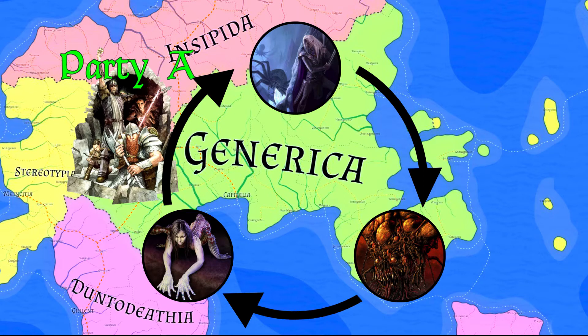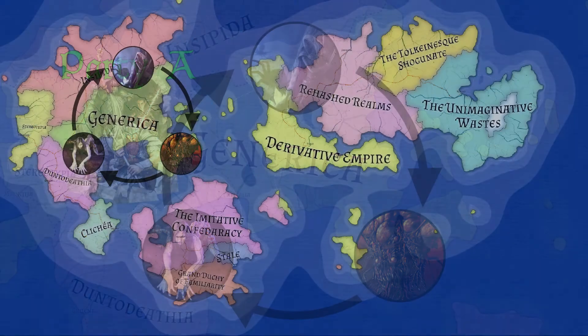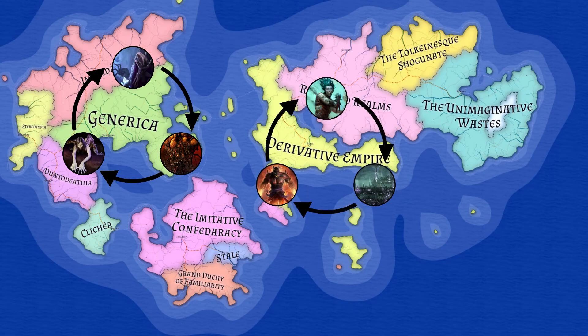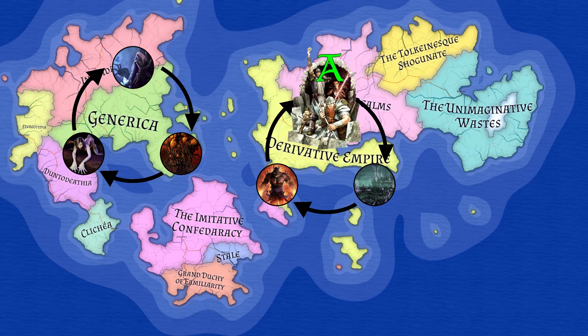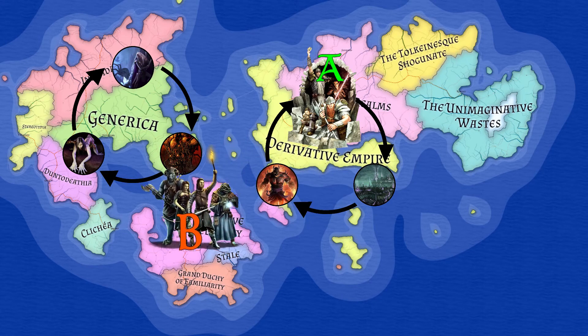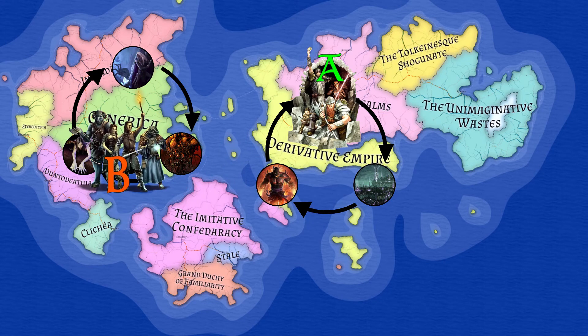Meanwhile Party B is in the Derivative Empire doing much the same. A few weeks ago you knew little to nothing about either land mass. Now if either party travels to the other continent you have some sweet lore, plus as much wiggle room as you need to accommodate new ideas.